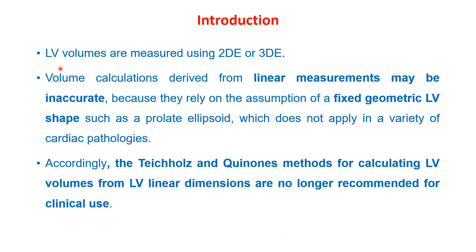Left ventricular volumes are measured using either 2D or 3D echo. Volume calculations derived from linear measurements may be inaccurate because they rely on the assumption of a fixed geometric left ventricular shape, such as the prolate ellipsoid method, which doesn't apply in a variety of cardiac pathologies. Accordingly, the Teichholz method and Quinones method for calculating LV volumes from linear dimensions are no longer recommended for clinical use.